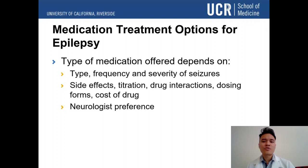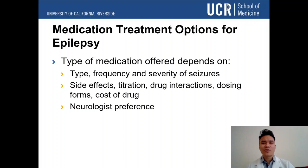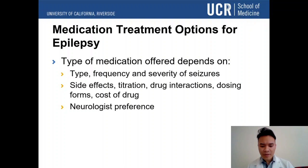There are many medication treatment options for epilepsy, but they must be tailored to the specific patient based on the type, frequency, and severity of seizures, as well as side effects, titration, drug interactions, dosing, forms, and cost. The neurologist's own experience and preference also plays a role. You must always weigh whether the benefits of seizure control outweigh the risks and costs of treatment for the child and family.